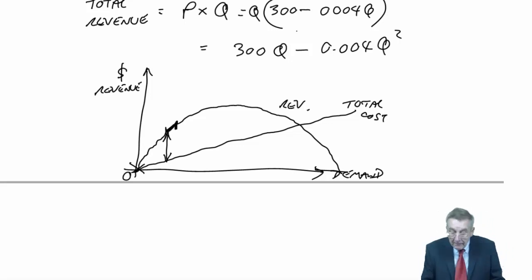and we said, if the extra revenue is more than extra cost, the profit will increase, and that's good. But if you got to the stage where the extra revenue is less than the extra cost, the profit would fall, and that's bad.